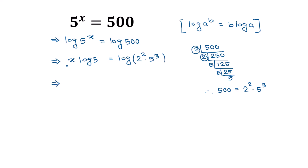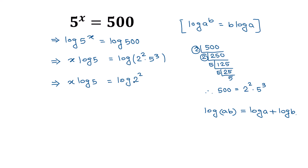Now applying the logarithm product formula — log of a times b equals log of a plus log of b — we can write log of 2² times 5³ as log of 2 squared plus log of 5 to the power 3. So the equation becomes x times log of 5 equals log of 2² plus log of 5³.